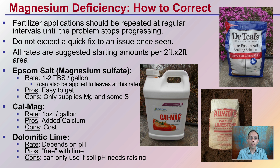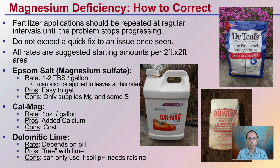There are some suggested fertilizers and application rates. Follow the recommendations on the package you may be purchasing. Epsom salts is one — quick and easy. One to two tablespoons per gallon, and that can be applied as a soil drench or applied directly to the leaves. The advantage is it's very easy to get — drugstores have it, just go out and grab it and you can apply it the same day. It only supplies magnesium, with some sulfur also included.